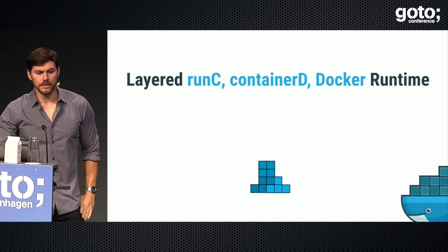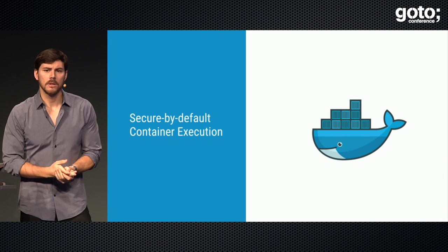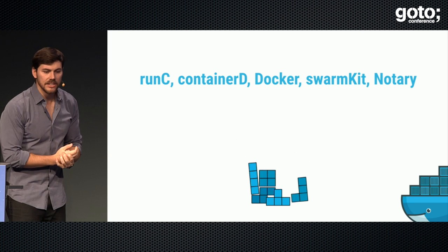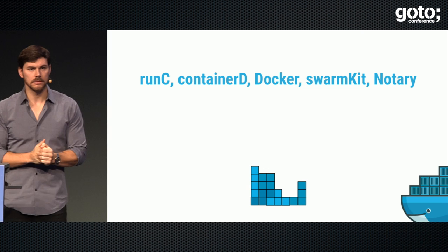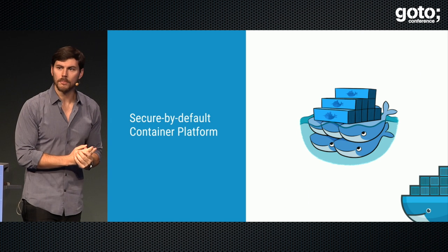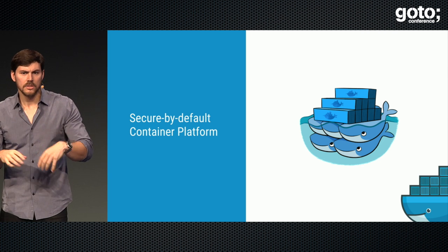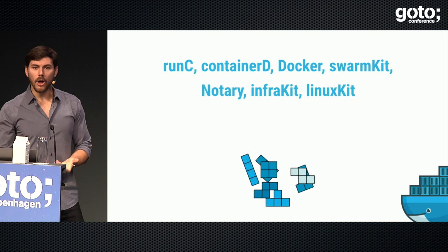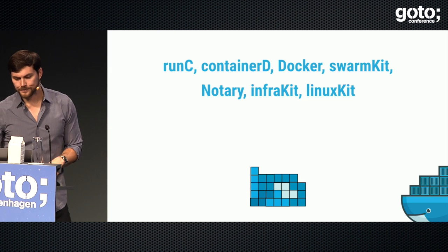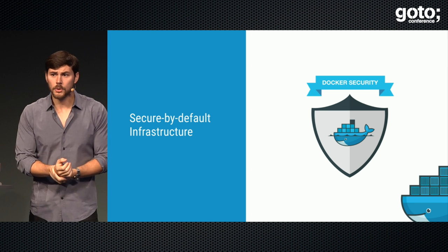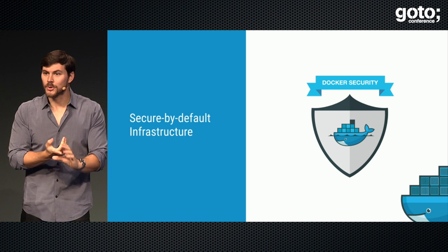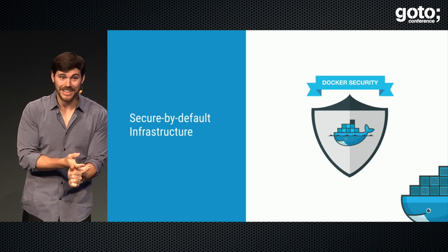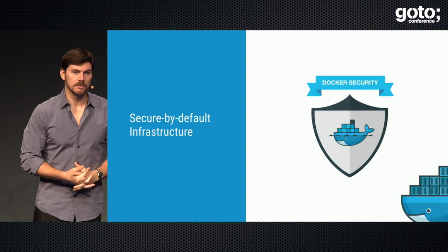Layering RunC, Containerd, and Docker gives you secure-by-default container execution — what Docker provides when you install it and run `docker run`. Add SwarmKit and Notary, and you get a secure-by-default container platform with container execution, secure secret distribution, secure node introduction, and containers running in a least-privileged manner. And if you put all seven Tetrominoes together, you get secure-by-default infrastructure: remote attestation and verification from boot, golden images built with minimal LinuxKit OSes, running minimal Docker containers with secure default configurations, in a cluster with mutual TLS and secure secret distribution, all with Notary digital signatures and transparent key rotation.